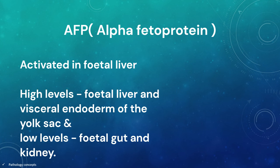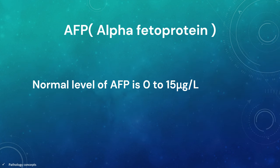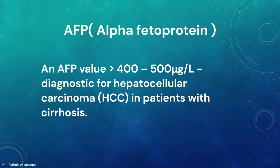Alpha-fetoprotein is highly activated in fetal liver and significantly repressed shortly after birth. High levels are seen in fetal liver and visceral endoderm of the yolk sac, and at low levels in fetal gut and kidney. The normal level of AFP is 0 to 15 microgram per litre. An AFP value more than 400 to 500 microgram per litre has been considered to be diagnostic for hepatocellular carcinoma in patients with cirrhosis.